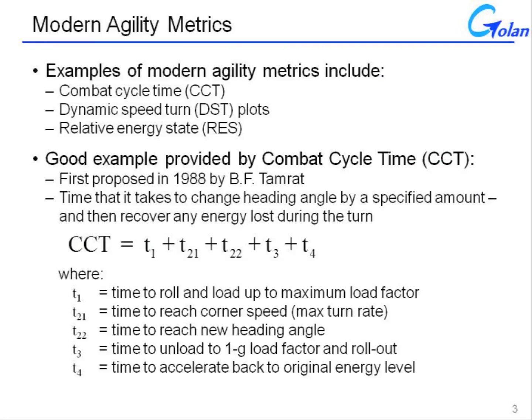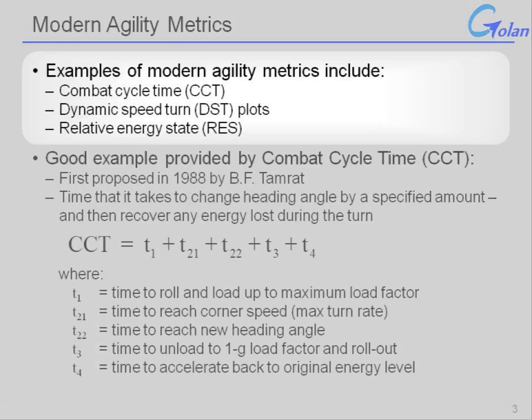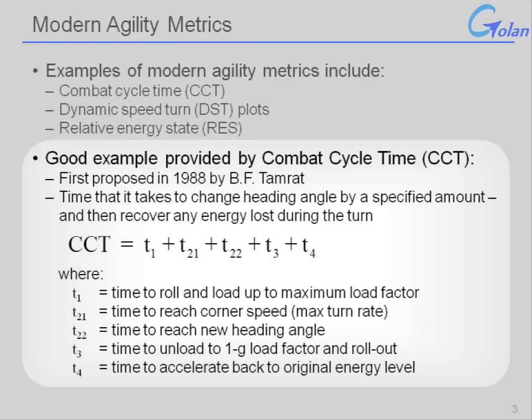The alternative modern agility metrics include things like combat cycle time, dynamic speed turn plots, relative energy states, and so forth. These are metrics that rely on a direct simulation of a particular maneuver as a point of comparison. Combat cycle time, for example, was first proposed back in 1988.